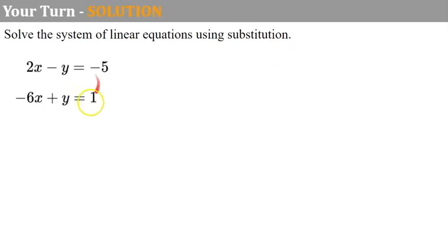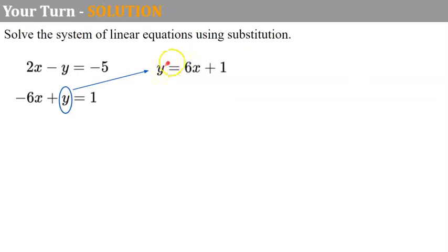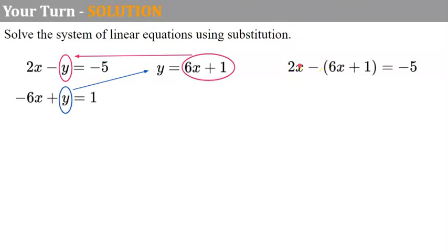Welcome back. Neither of these equations are solved for y or x, so I'm going to solve the first equation for y by adding 6x to both sides: y equals 6x plus 1. Now I'm going to take this expression for y and substitute it into the second equation for y: 2x subtract y, which is 6x plus 1. Now here's a little trick — there's an invisible negative 1 you need to distribute. You must subtract both terms, or think of it as distributing negative 1.